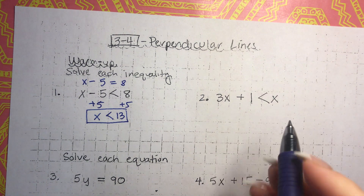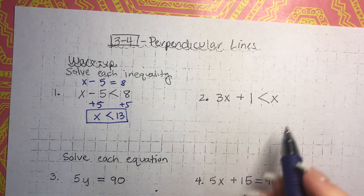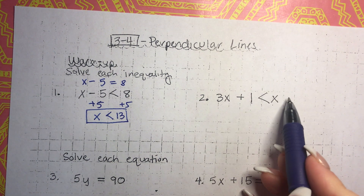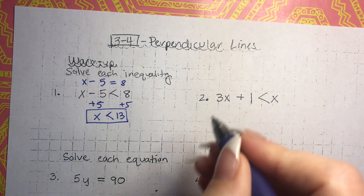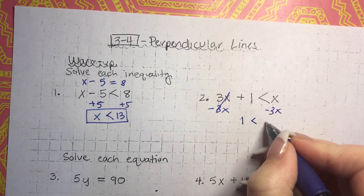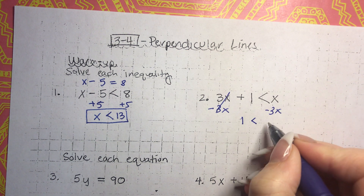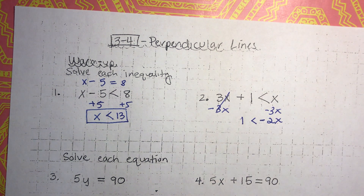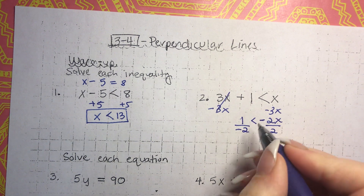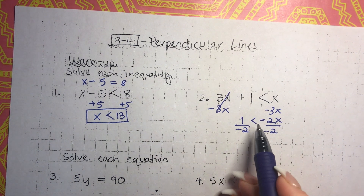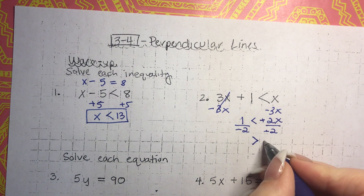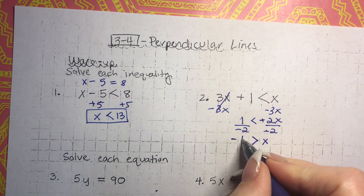The only thing that's different between equations and inequalities as far as solving them is that whenever you multiply or divide by a negative number, you have to flip that sign. Here, we have variables on different sides of the inequality sign, and I want to get them on the same side. I'm going to move the negative 3x to both sides — that cancels, we're left with 1. And x minus 3x would be negative 2x. We want to get x by itself, so we're going to divide both sides by negative 2.